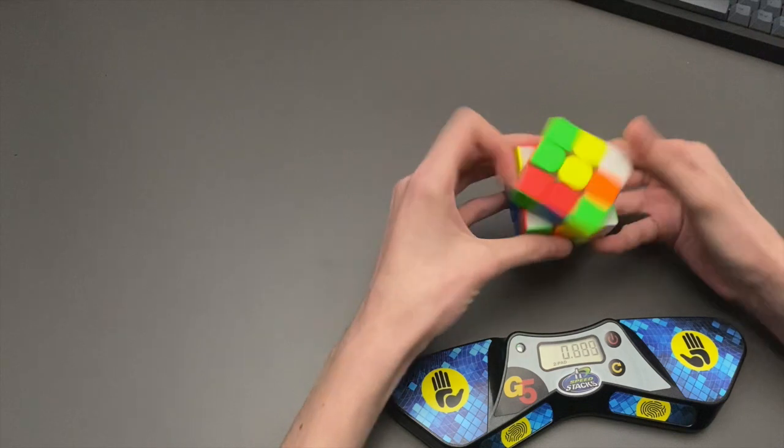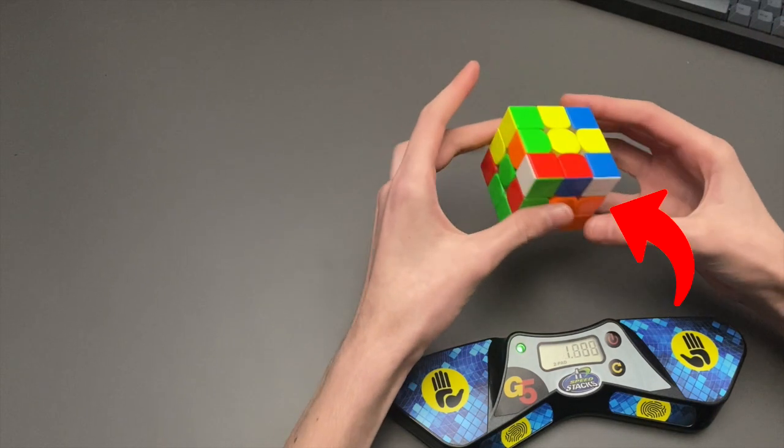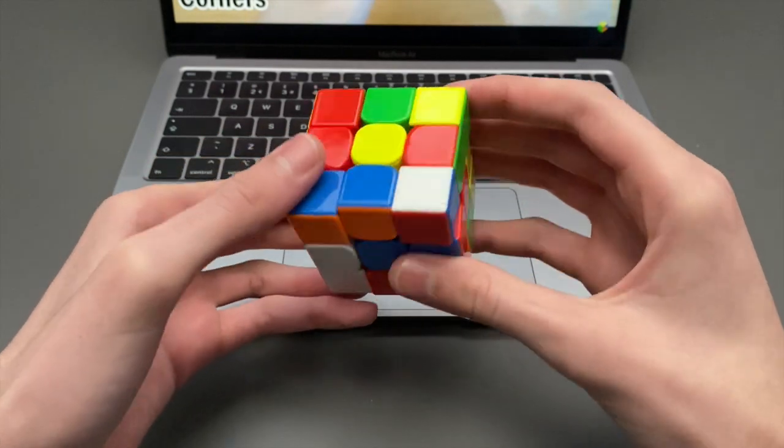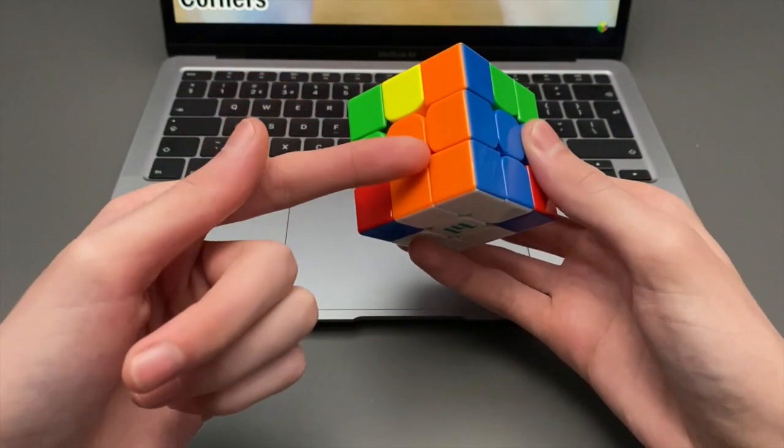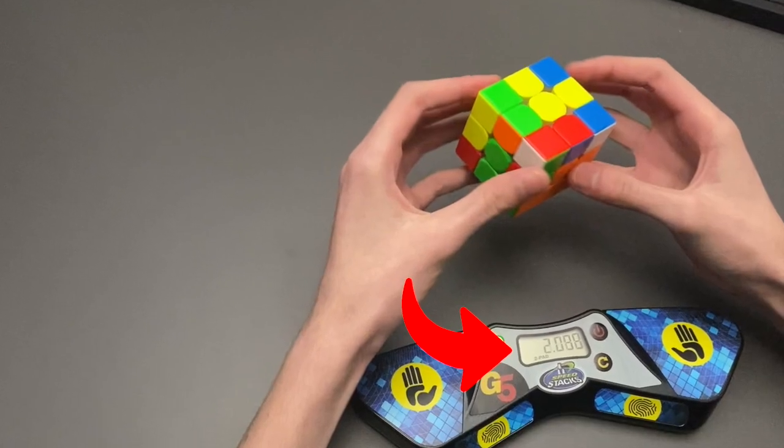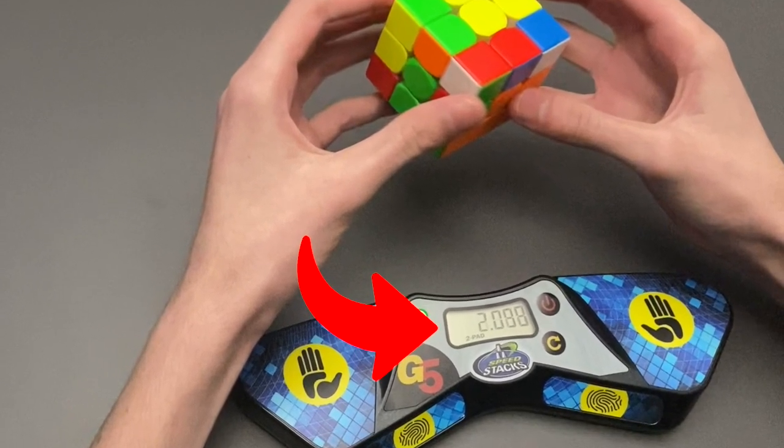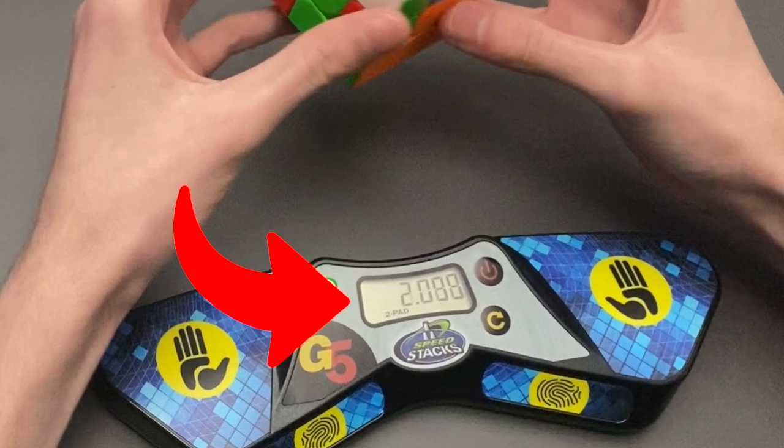To begin with, I built an X-cross using the keyhole insert method. This is something that took a long time to learn, but it has really helped my solves. I watched lots of videos on how to effectively do this insert, which allowed for a fast and efficient cross and first pair. In just two seconds, I had already completed a good amount and I was set up for a really fast solve.